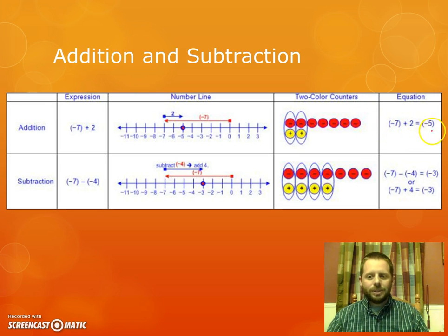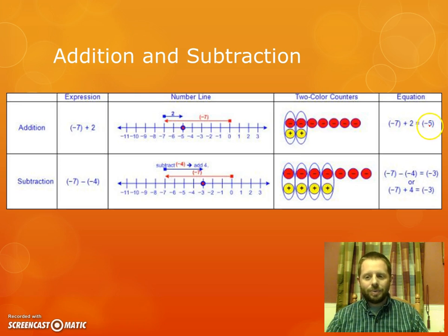In simple equation form, this is all we're saying: that any time we add negative 7 plus positive 2, it equals negative 5.